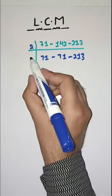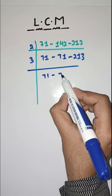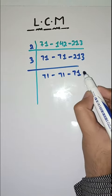Now with 3. 71 as it is. 3 7s are 21, and 3 1s are 3.